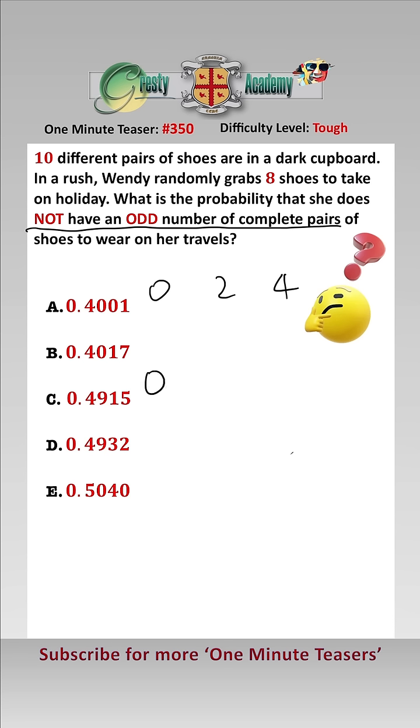So case one, she has zero pairs. Well, therefore, she must have chosen all eight shoes from ten different pairs, which is 10C8. And she could have chosen the right or the left shoe, which is 2C1 to the power of eight.